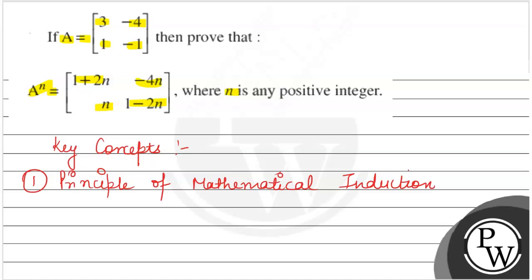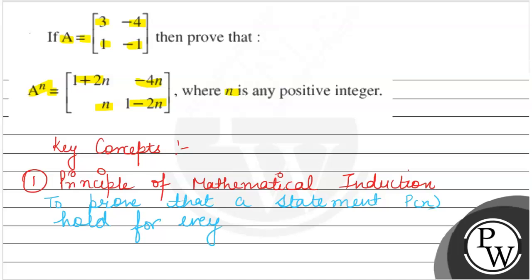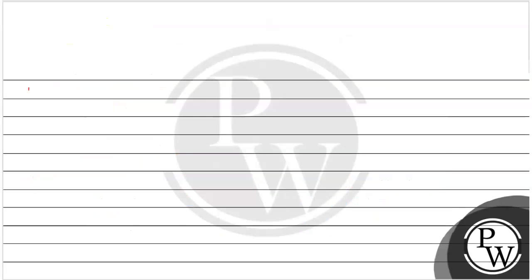This principle is used to prove that a statement P(n) holds for every natural number, which is n = 1, 2, 3, and so on. The next key concept that is used is multiplication of matrices.